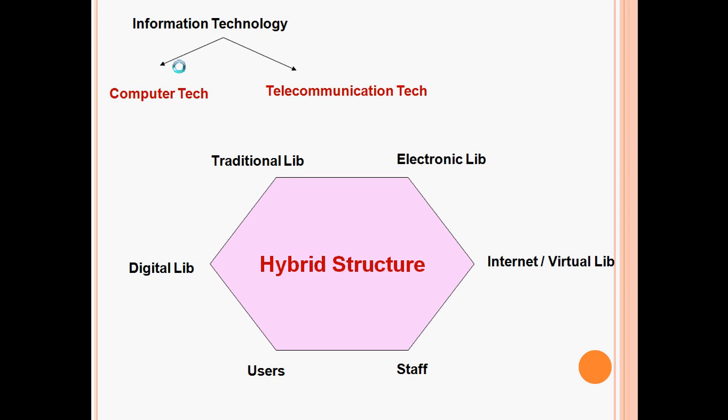In the present times, libraries are hybrid in structure. We have traditional libraries, which is the trinity of books, users and staff. The modern libraries encompass electronic libraries, digital libraries and internet-based virtual libraries.